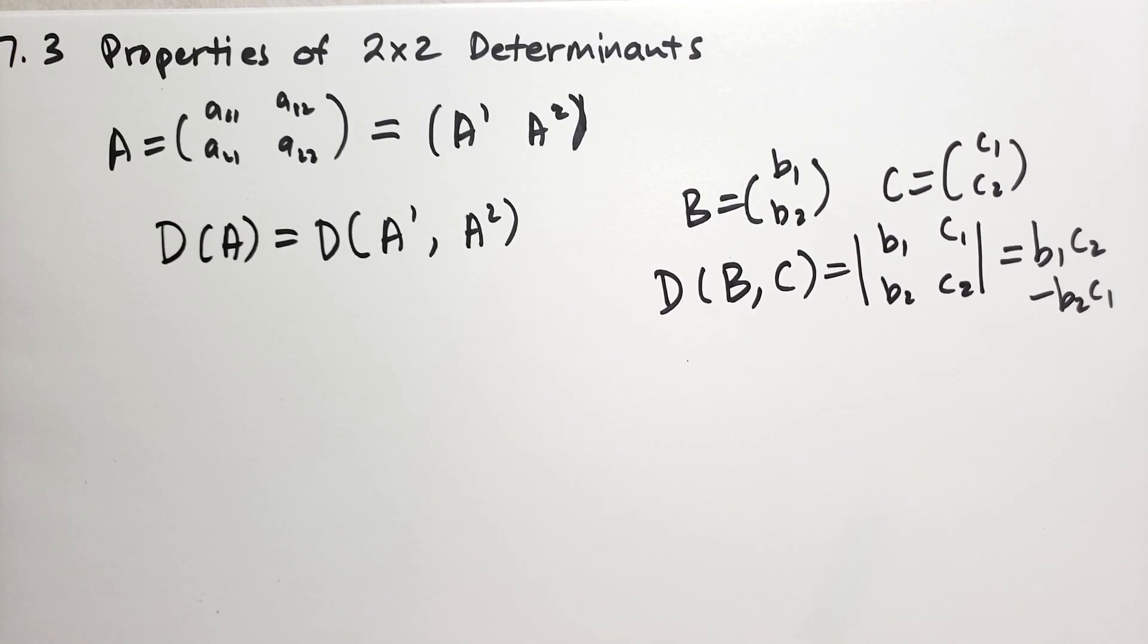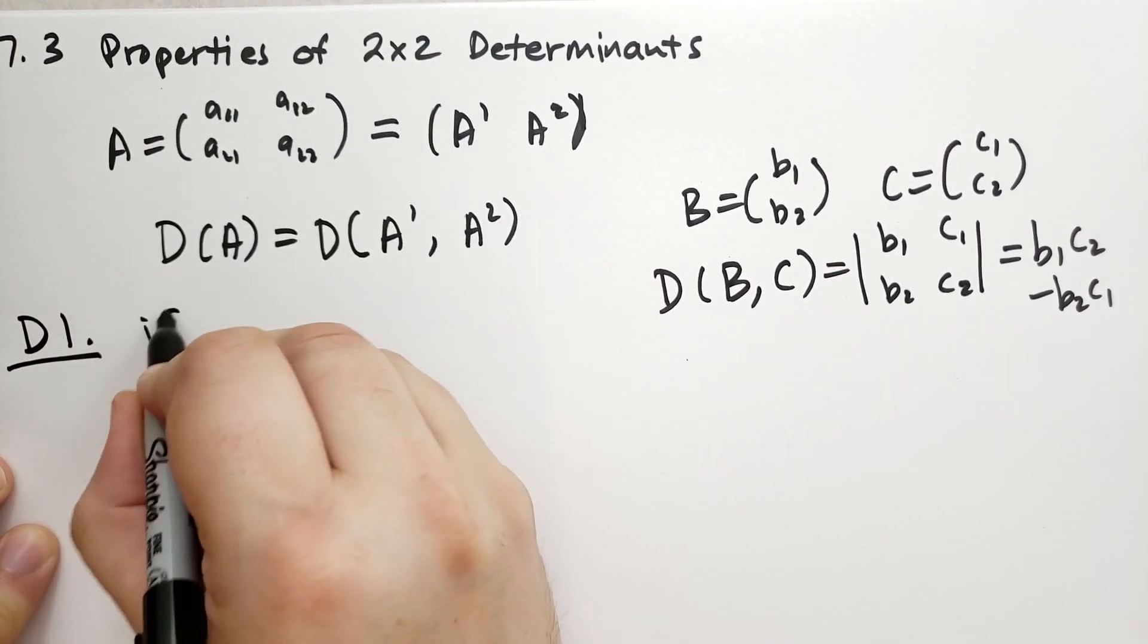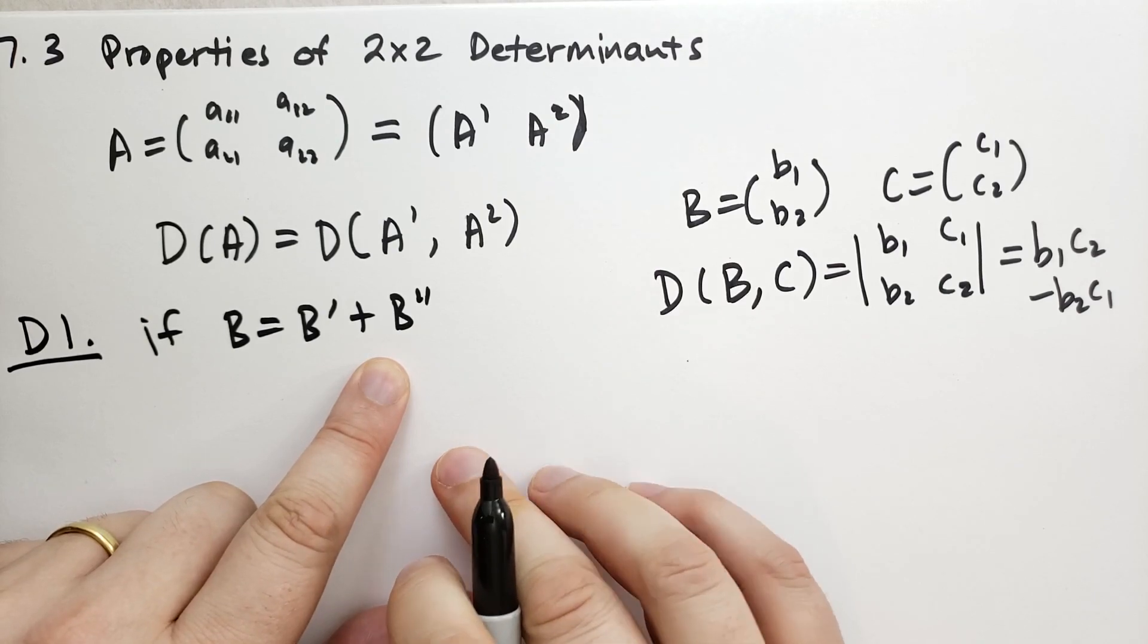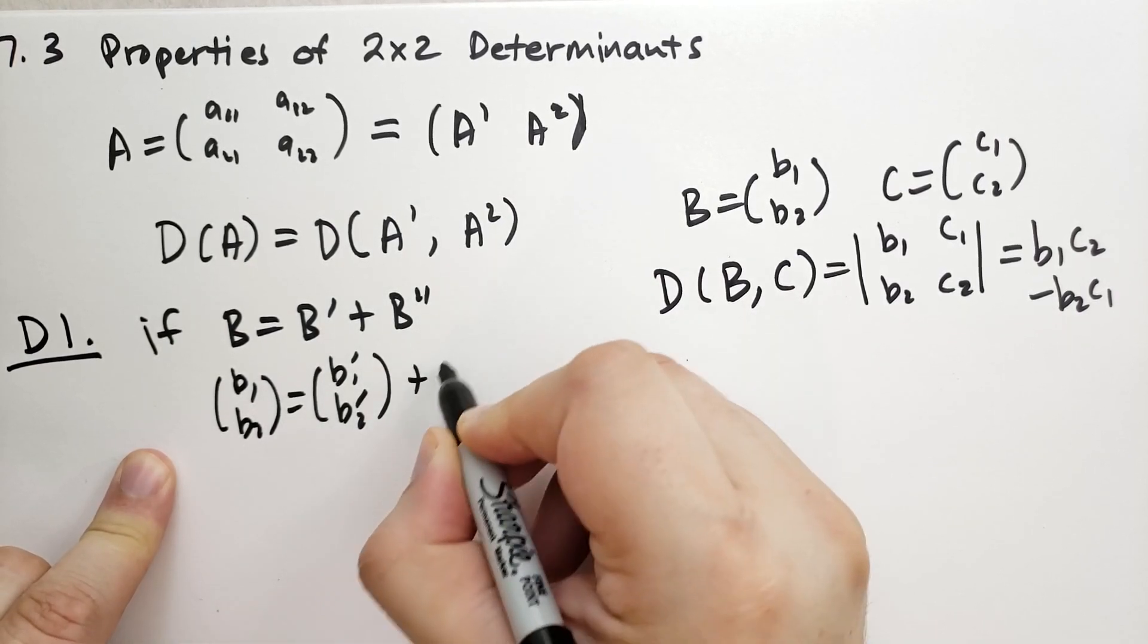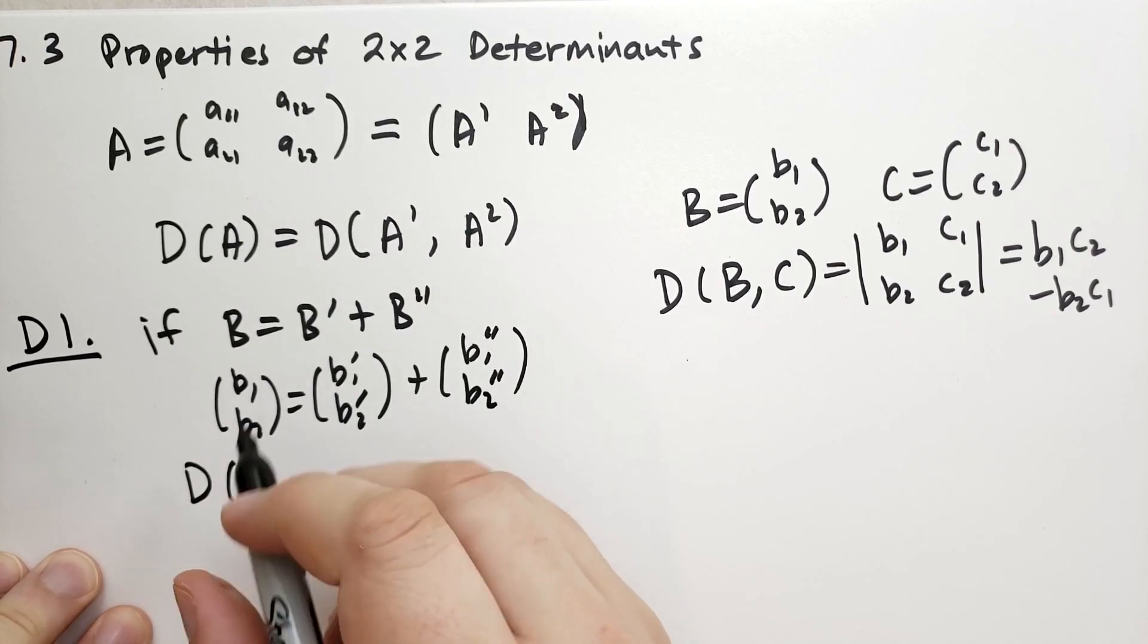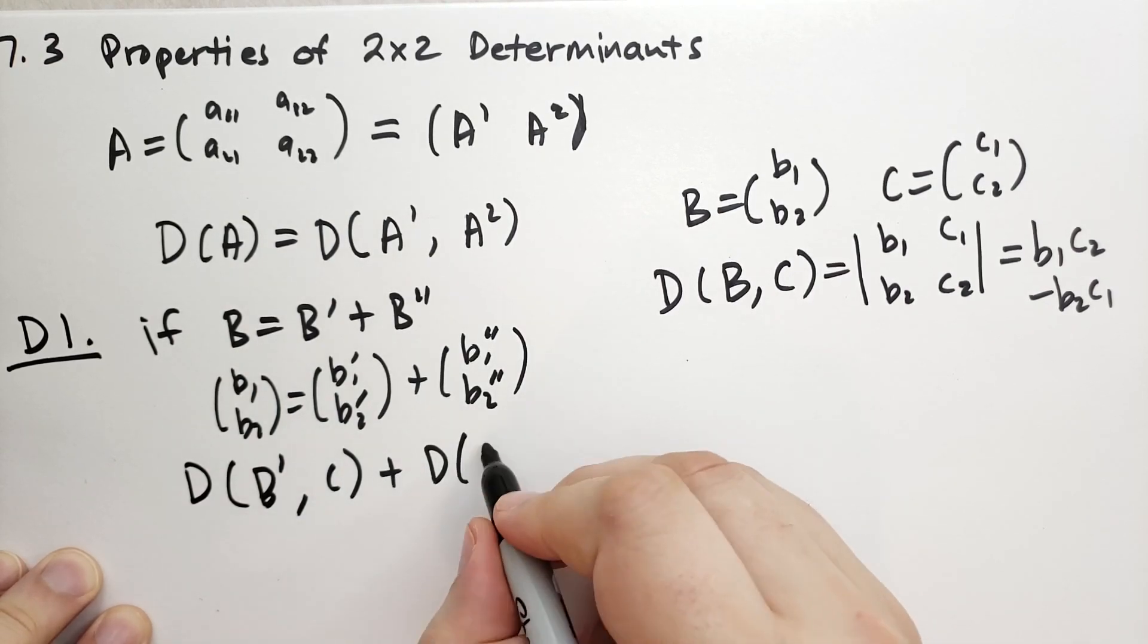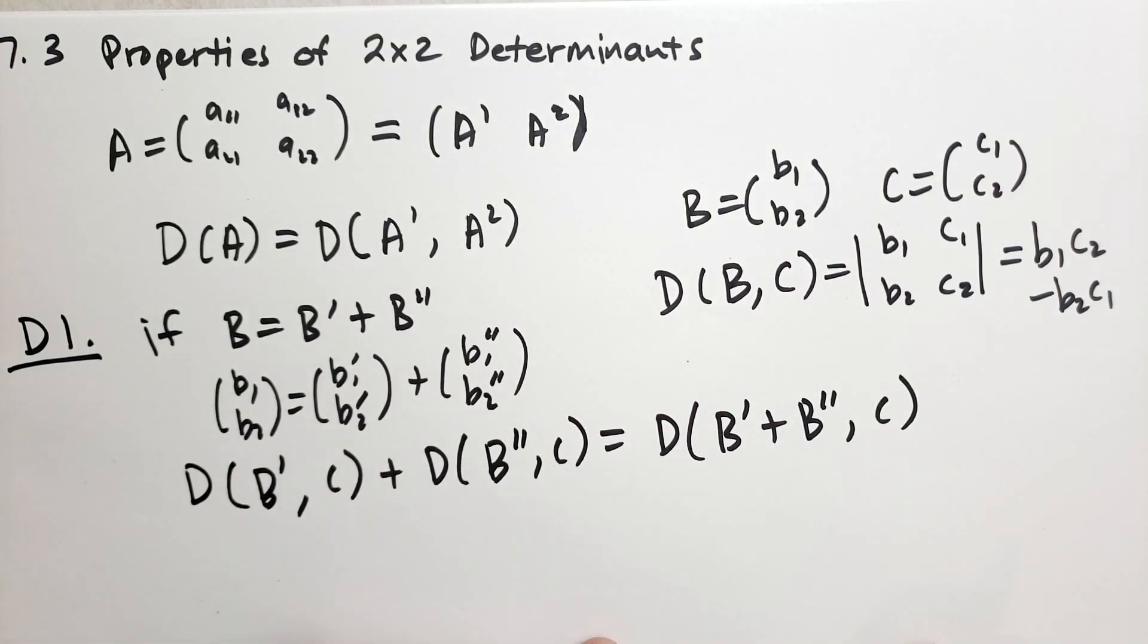To emphasize the dependence of the determinants on its columns, let's suppose we had two columns. We had B, which is just the column vector B1 and B2, and we had C, which is the column vector C1 and C2. Then the determinant of the column vector B and the column vector C, that's the same as B1, B2, C1, C2, which is equal to B1C2 minus B2C1.